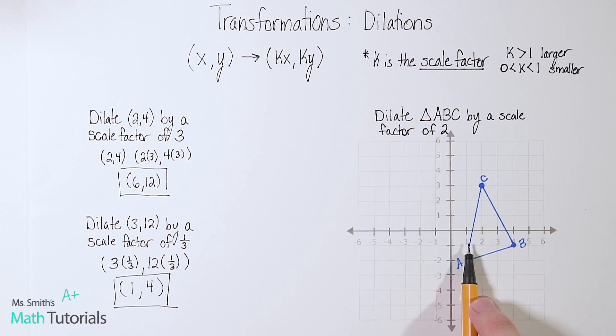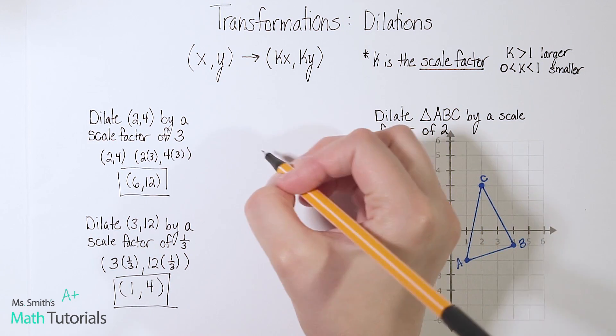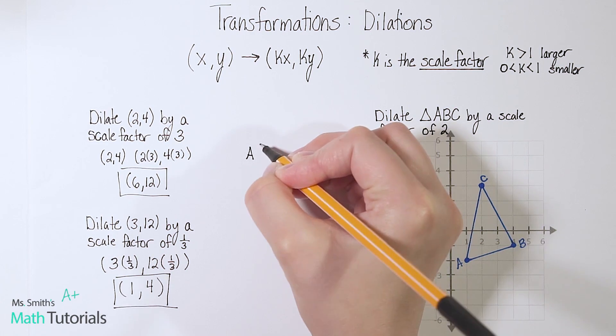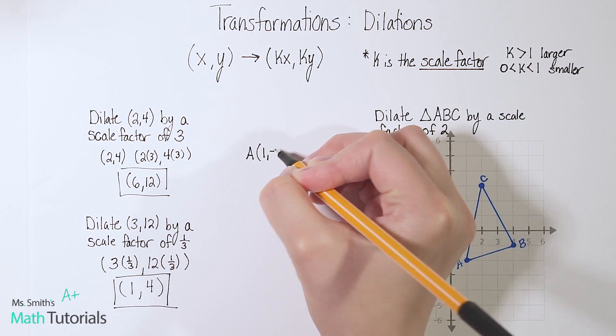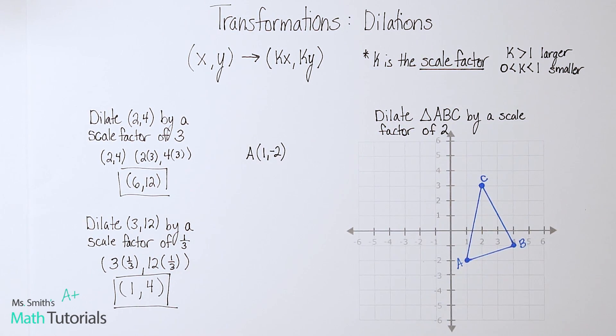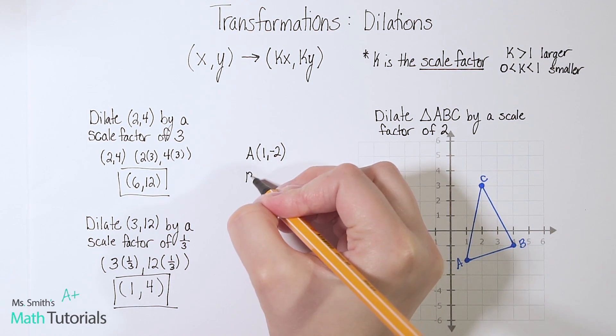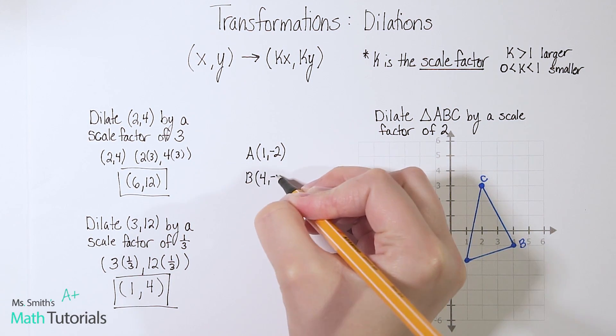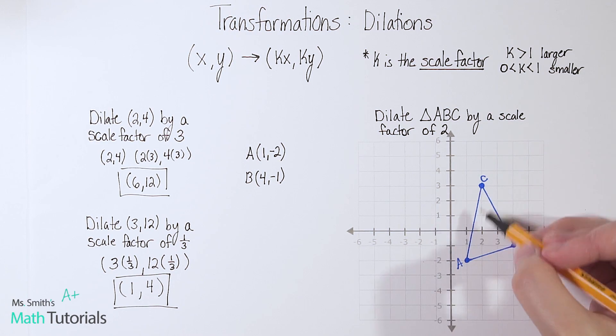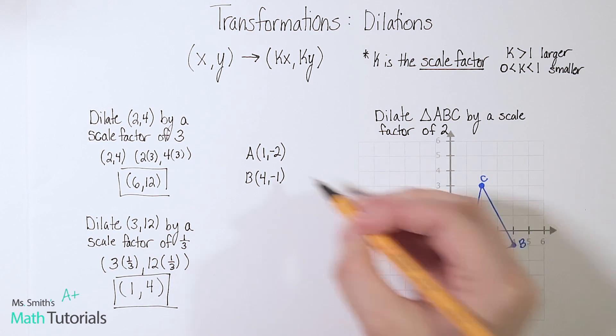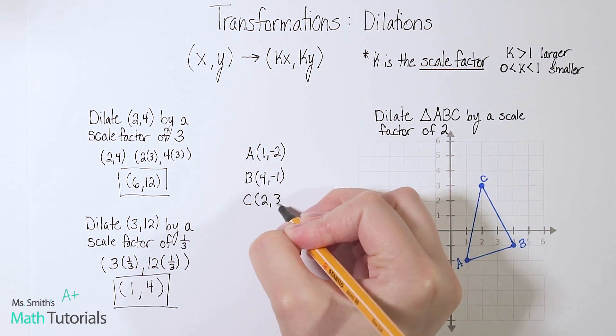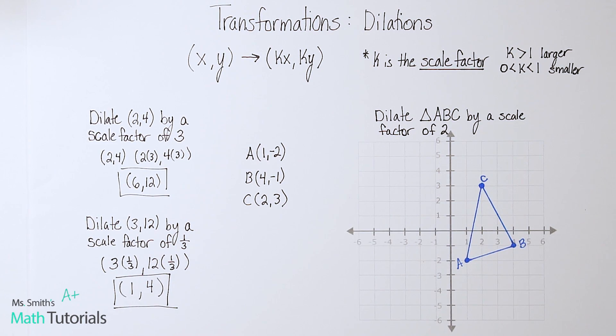So we'll start with A. Point A falls at (1,-2). So let me note that over here. A falls at (1,-2). B falls at (4,-1). C falls at (2,3).